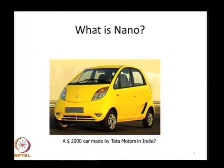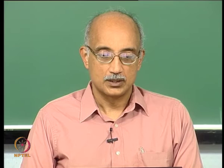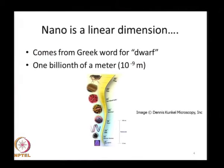What is nano? You have all seen the Tata Nano car — does it really qualify as nano technology? It is small, but is that sufficient? Nano gives a connotation of something technologically very advanced, state of the art. I think the nano car did represent a huge breakthrough in manufacturing technology. But fundamentally, nano is a dimension — nothing more and nothing less. It is a linear dimension derived from the Greek word for dwarf.